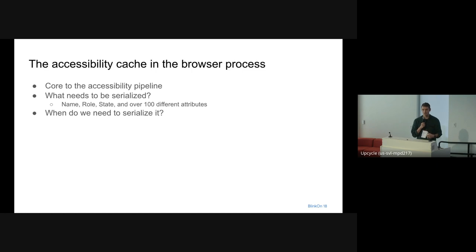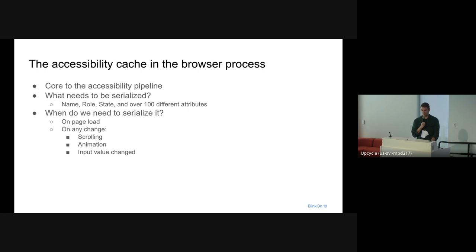That means that as soon as we have a page load, we have to serialize that content. As soon as anything changes in the web page, we have to serialize those changes. So that means whenever the user is scrolling, whenever there's an animation, whenever the user is typing their email inside of an input box and the value of that input box changes, we have to serialize that. Whenever there's any event, we have to serialize it — basically whenever there's any type of property change.